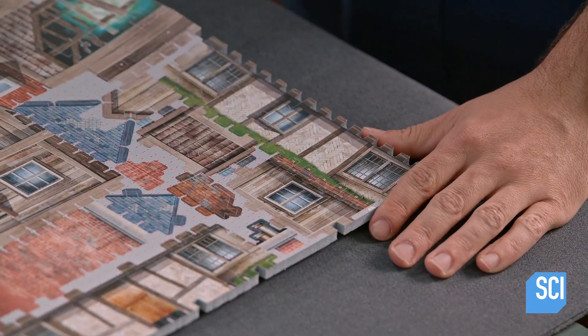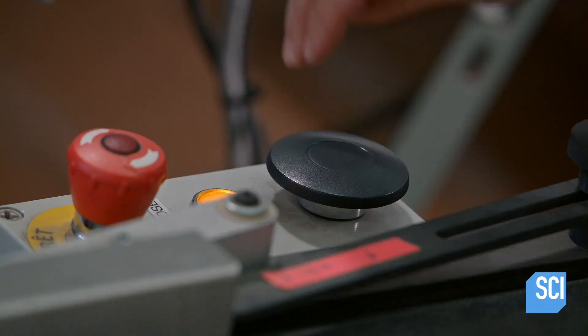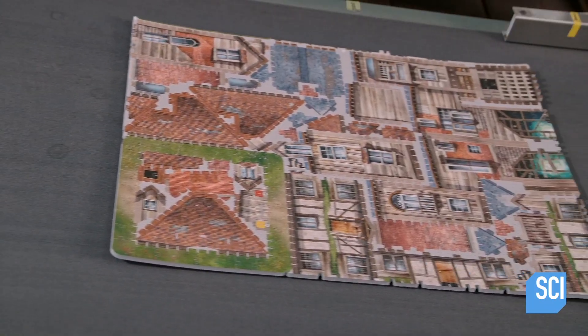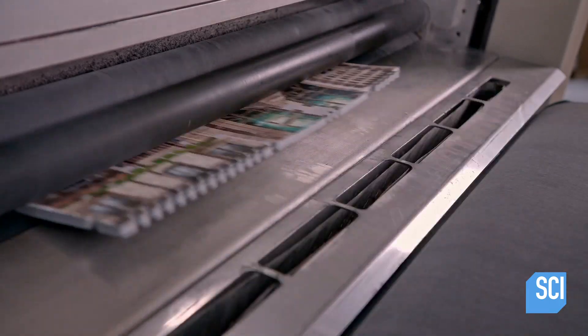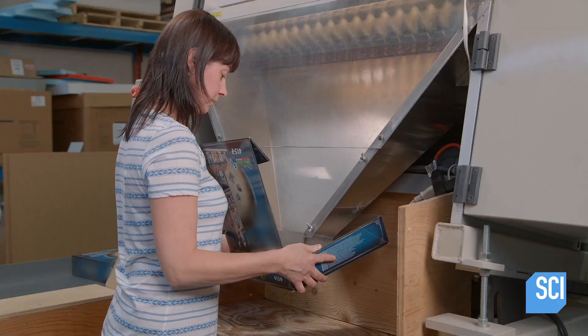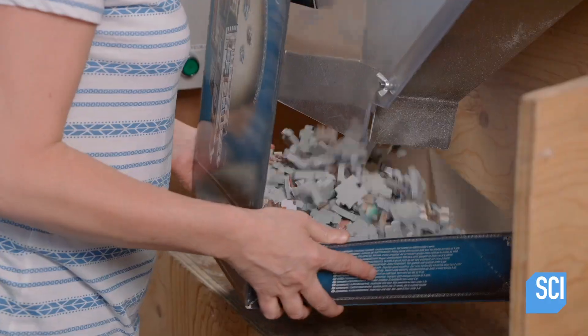The machine infuses the die-cut puzzle sheet with steam. The steam prevents static electricity, which causes pieces to cling together or to the inside of the machine. The machine separates the pieces and dispenses them into a puzzle box.